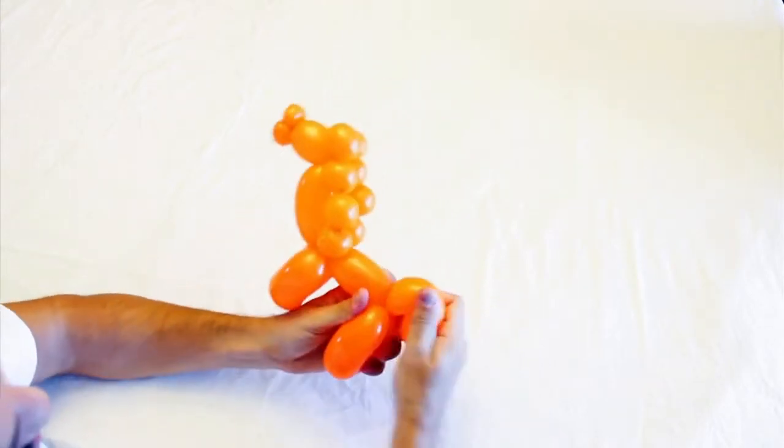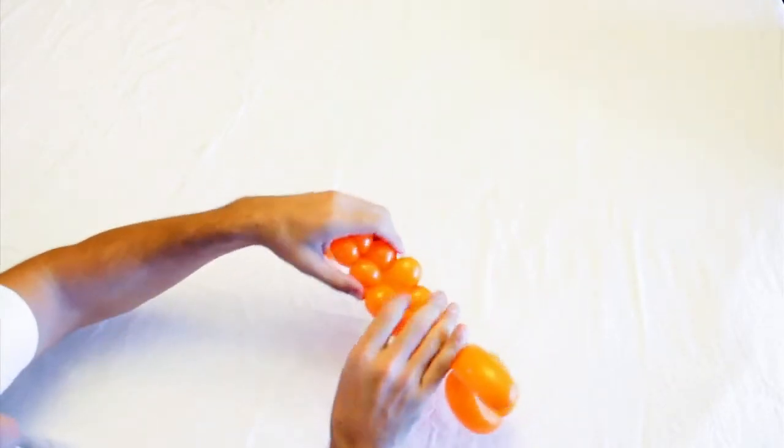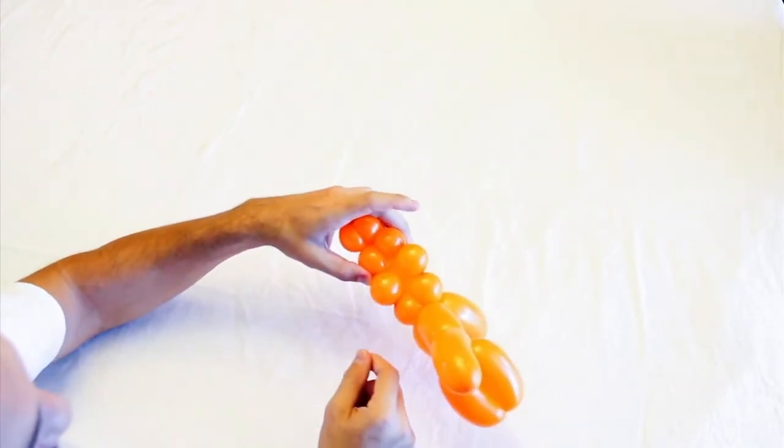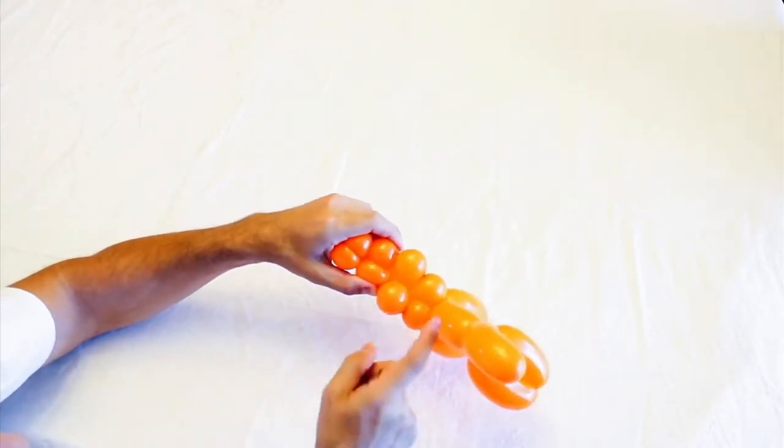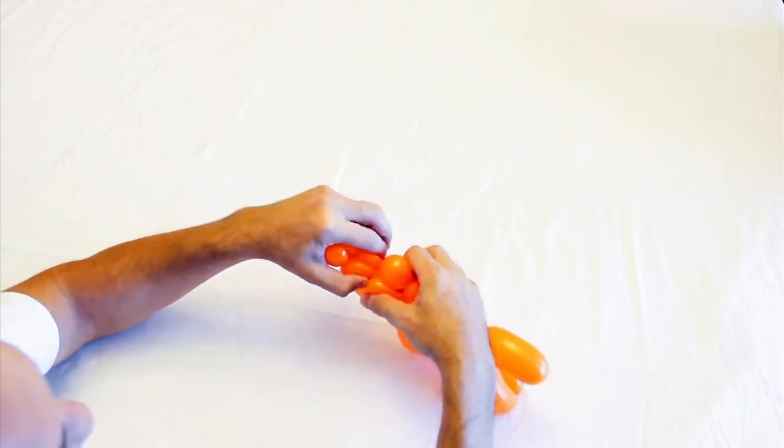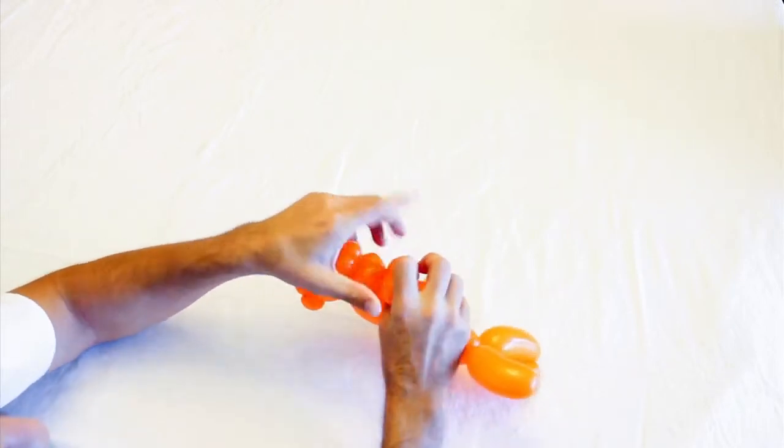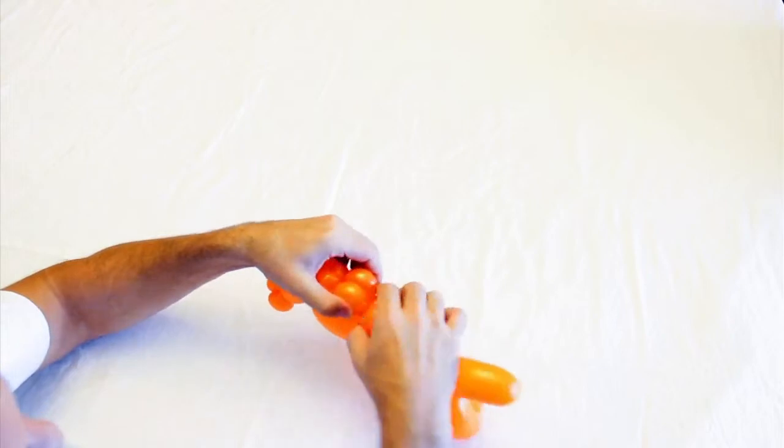Then I give this tail a little curl. And these, what you want to do with these ideally is braid them. So I'm going to bring this one over, this one under, and then push this one back. Ideally, switch them, and then put this back in place.